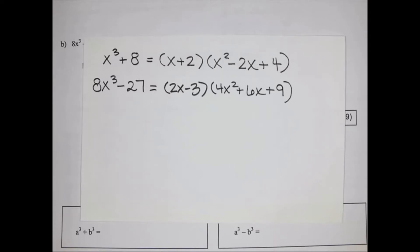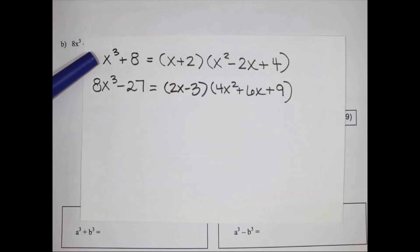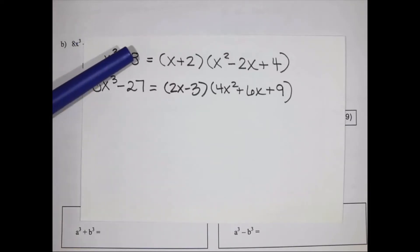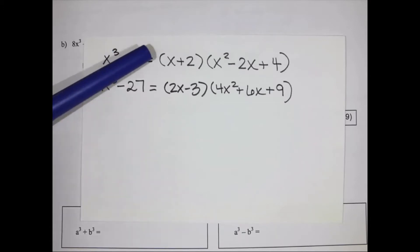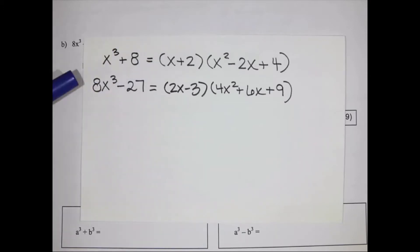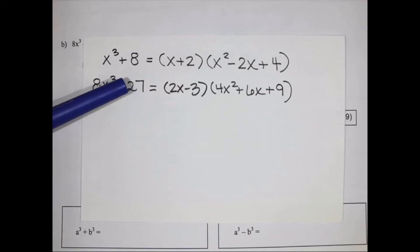Take a second and think about how you could go from the original question to just that first bracket. We're not worrying about the second bracket — how could you go from x cubed plus 8 and get x plus 2? How could you go from 8x cubed minus 27 to 2x minus 3? I'll give you a second to ponder.